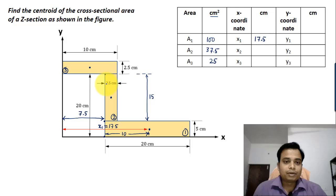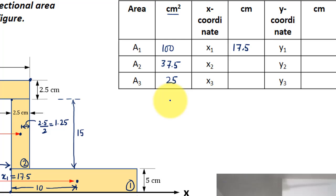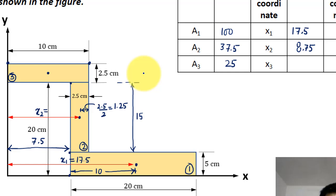What's next? That's x2. Now, this distance is nothing but half of 2.5, which is 1.25. If I were to calculate the value of x2, it will be from here to here, that is 10 minus this 1.25. So 10 minus 1.25 will work out as 8.75. So the value of x2 is 8.75 centimeters.